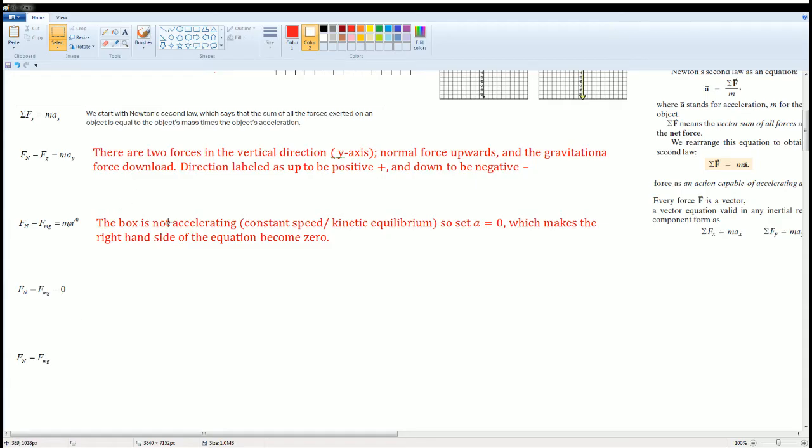The next line: the box is not accelerating. The scenario says that it had a constant speed, so there is no change in velocity, so the acceleration is zero. Another word for that is called kinetic equilibrium, so you can set a equal to zero. You could see it here they cross out the a and m, and they show the zero, which makes the right-hand side of the equation become completely zero because mass times a zero acceleration is automatically zero.